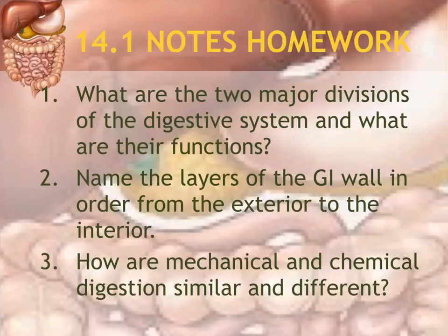Homework questions for 14.1: Number one — what are the two major divisions of the digestive system and what are their functions? Number two — name the layers of the GI wall in order from exterior to interior. Number three — how are mechanical and chemical digestion similar and different?